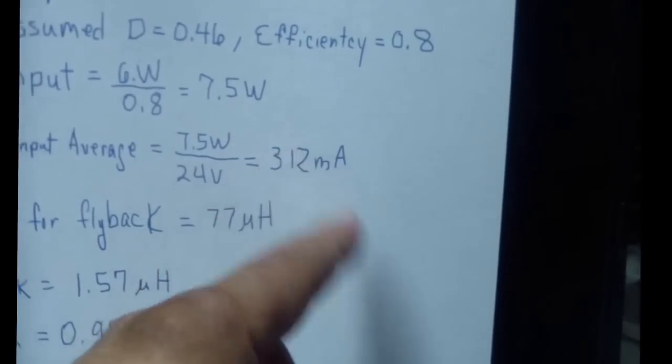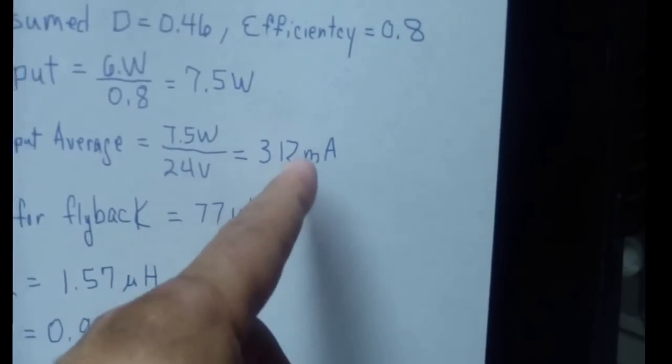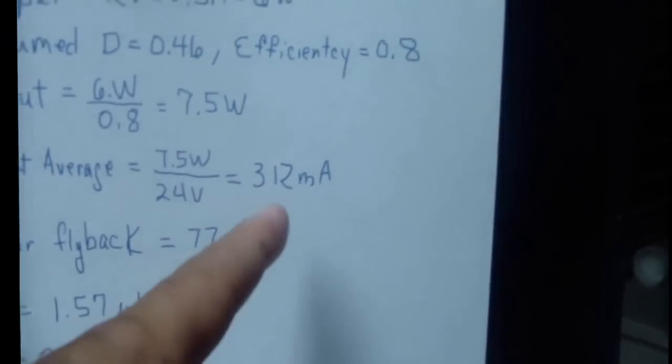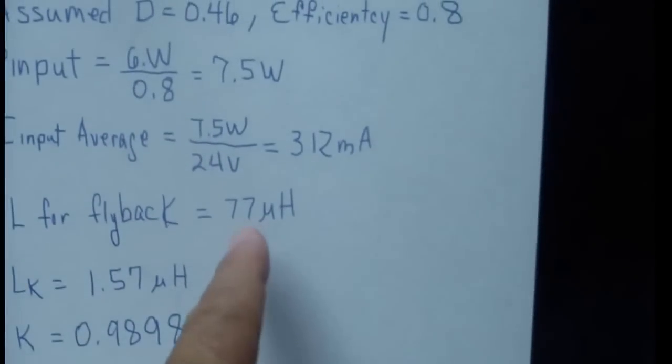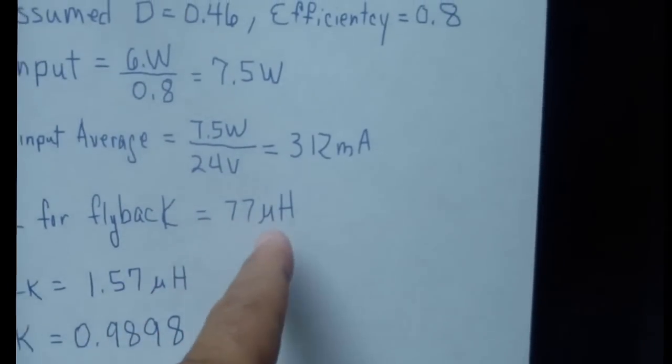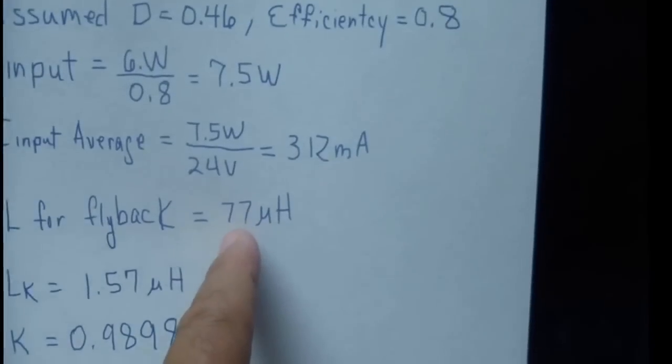Once I have that, I converted it into peak current. If you need to, you can view video 6—I go through the steps. Once I have the peak current, I went ahead and calculated what the inductance for the flyback was. In this case it's 77 microhenries.